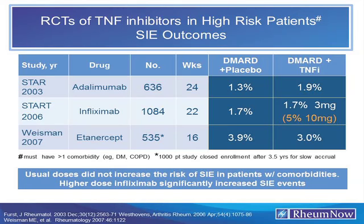Three studies mandated by the FDA with the first three TNF inhibitors enrolled patients who had comorbidities — heart failure, diabetes, and lung disease — required a DMARD non-response, and compared placebo to TNF inhibitors. There was no increase in SIE rate in these four- to six-month trials, with the exception of the adalimumab START trial where the very high dose of infliximab at 10 mg/kg did show a significant increase. Using generally accepted therapies, even patients with one risk factor don't necessarily have a higher SIE risk.